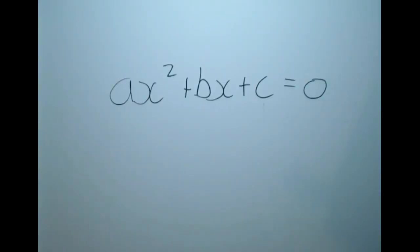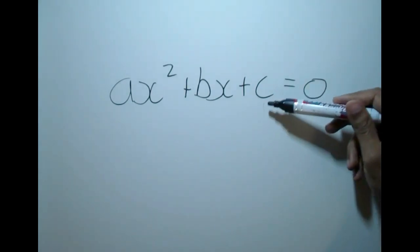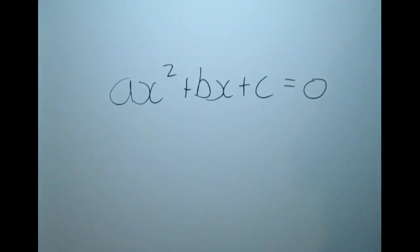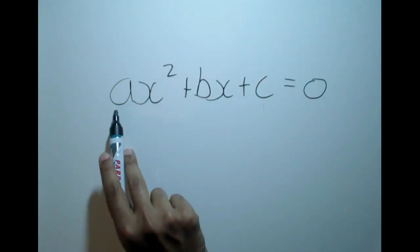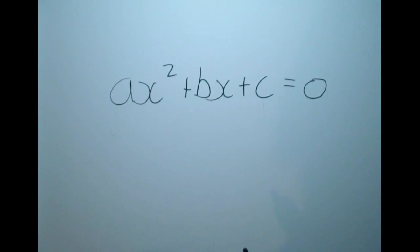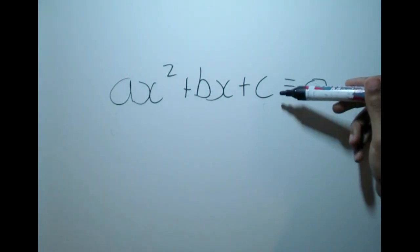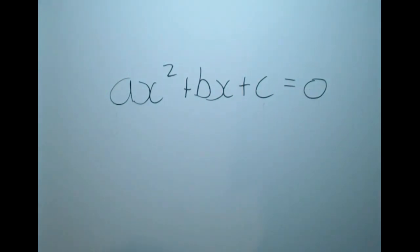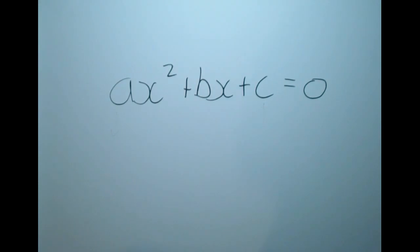Previously, factorizing quadratics required us to look at the last term and find the factors of the last term that give the middle number. Now we have this extra number at the front, so we have to look at the factors of the last term and the factors of the first term, and the combination of those two together which give the middle number. This is best illustrated with an example.